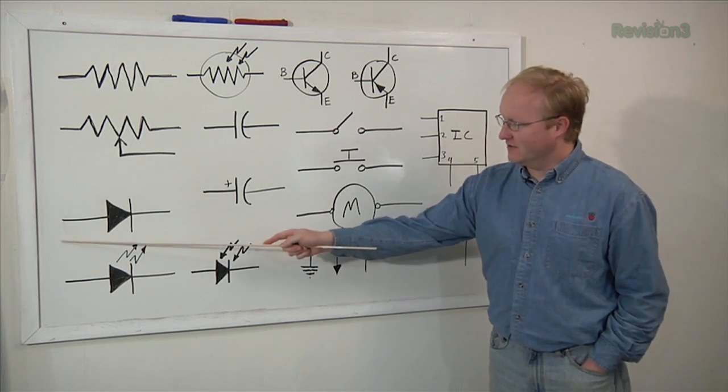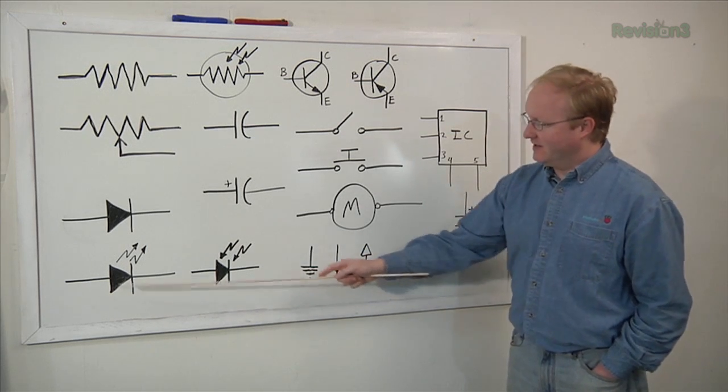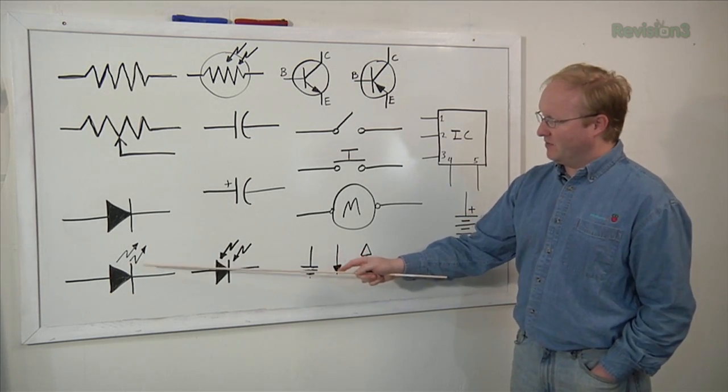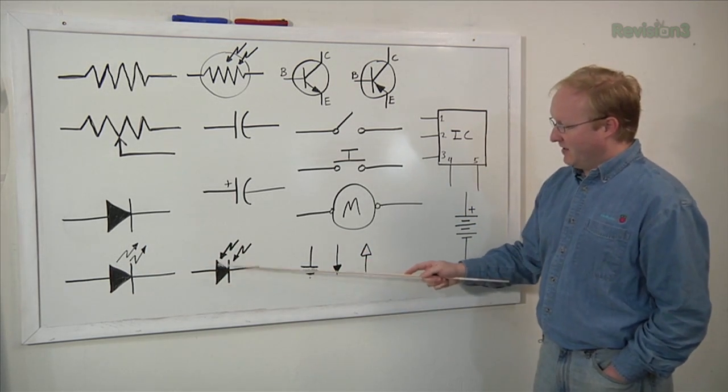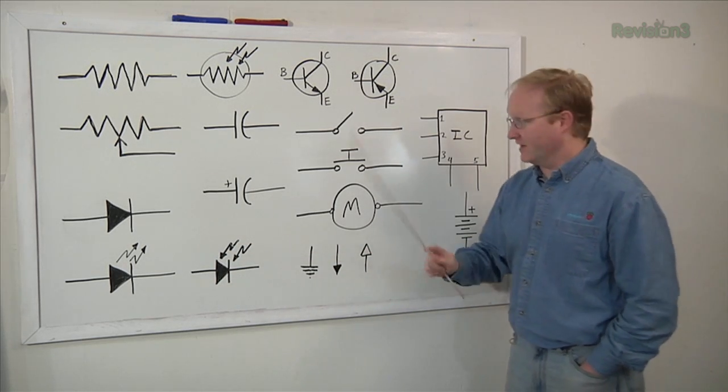Here's a diode. Current flows in this direction. Can't go this way. Here's a light emitting diode. Again, things coming in or out of components are represented by arrows. Thus, here is a photo detecting diode. Perhaps an IR diode.